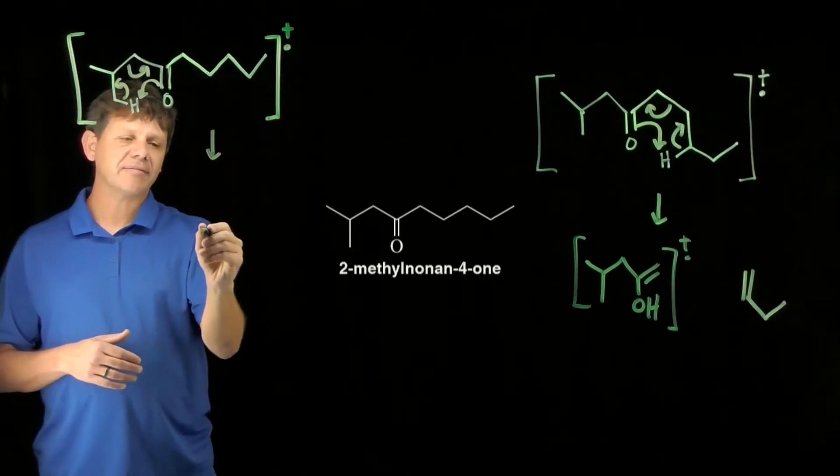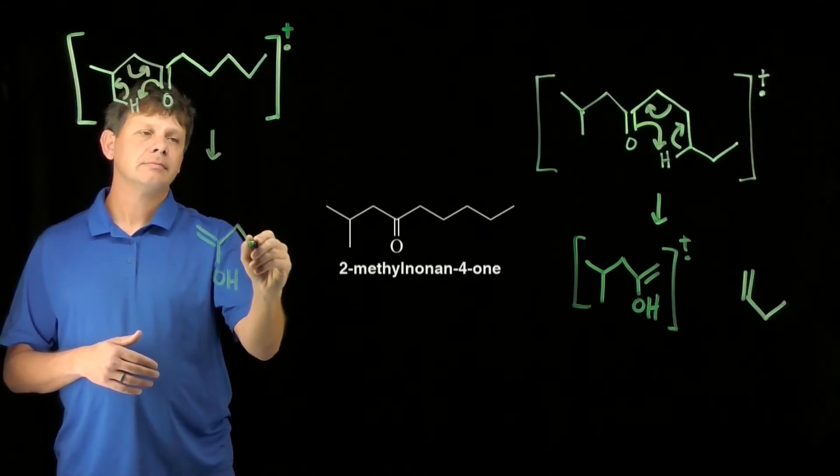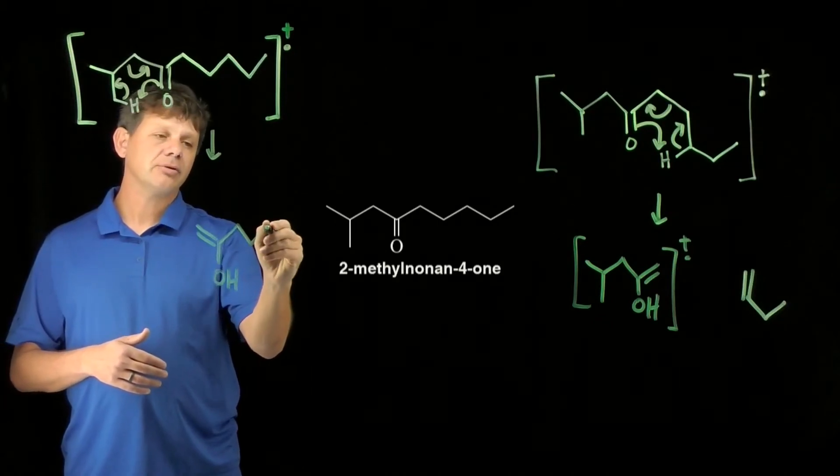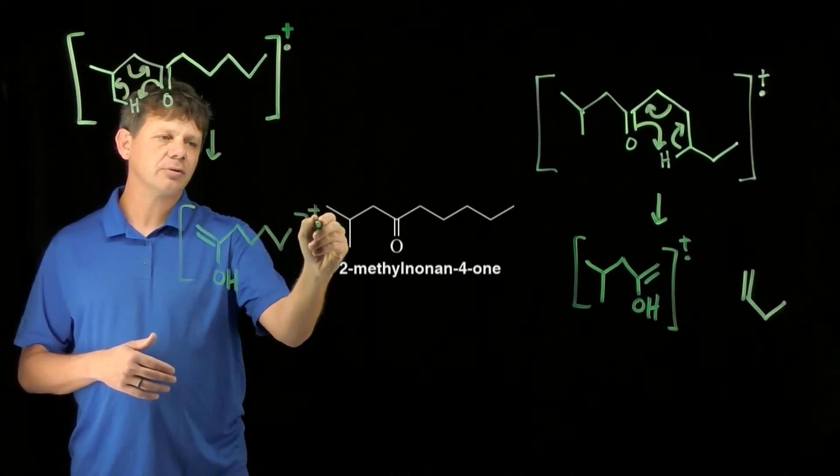This is going to once again give us an enol on one side—one, two, three—making sure our carbons are right, that we can assume stays as the radical cation.